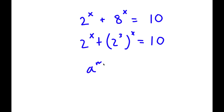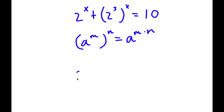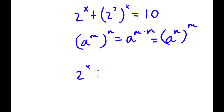Now, if I have something in the form a to the power of m to the power of n, this is equal to a to the power of m times n. So 2 to the power of 3 to the power of x is going to equal 2 to the power of 3 times x. However, this is also the same thing as a to the power of n to the power of m. So I can rewrite this as 2 to the power of x to the power of 3 — I simply switched these two exponents' places.